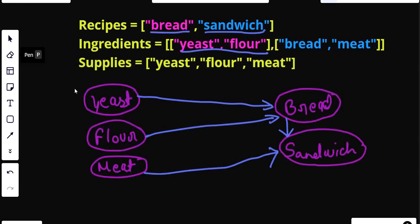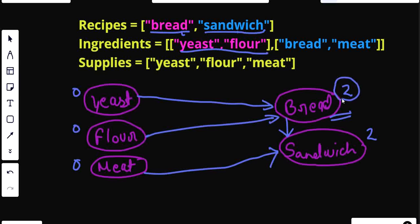The supply nodes have in-degree equivalent to zero — in-degree meaning the number of edges coming towards a node. These three supply nodes have in-degree zero. But bread and sandwich each have in-degree equivalent to two. If I check the ingredient list length for both of these recipes, it's also two. So the in-degree of a recipe node equals the number of ingredients required, and the incoming edges come from those ingredients.